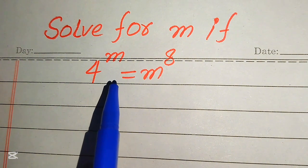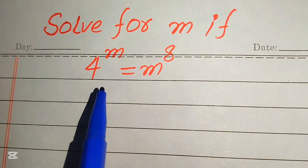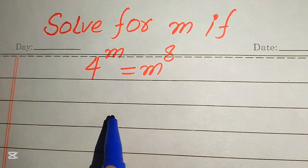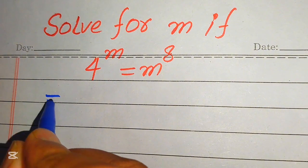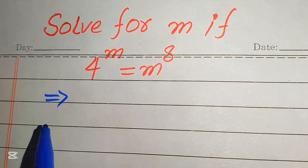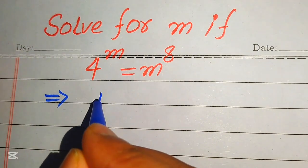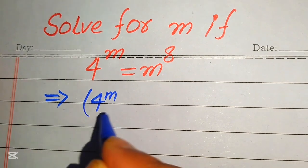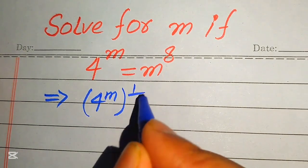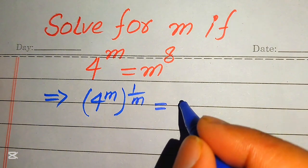To do this, we need to move the variable term m to the right hand side. In order to move m to the right hand side, we take the mth root on both sides — which means we take the 1 over m power on both sides.